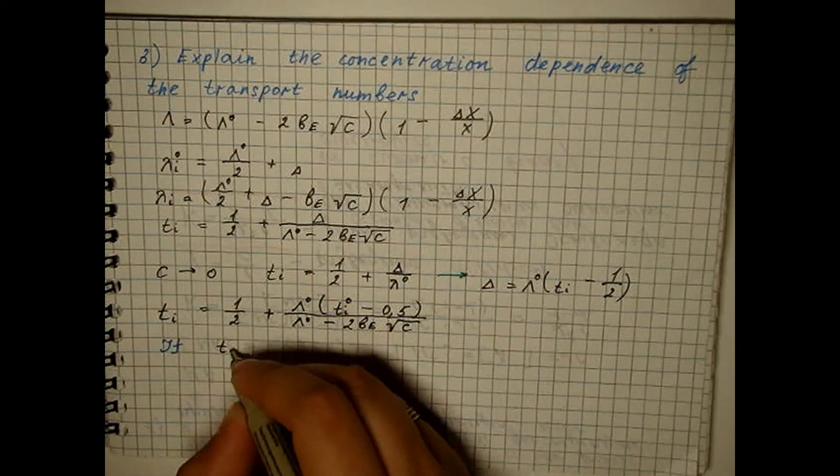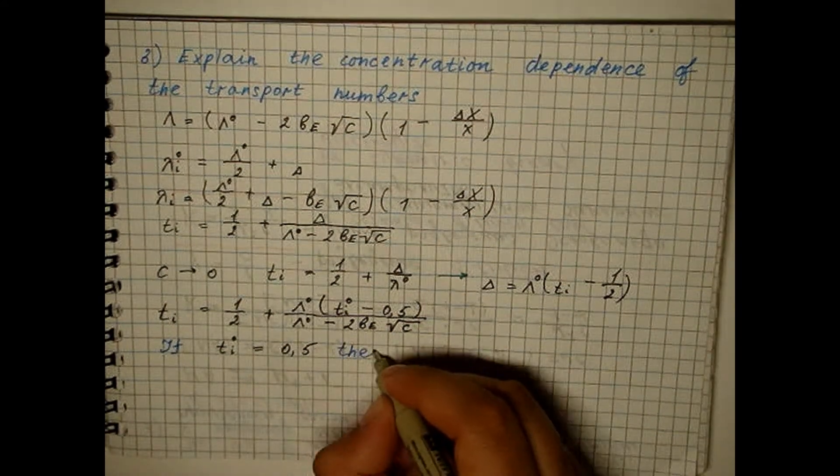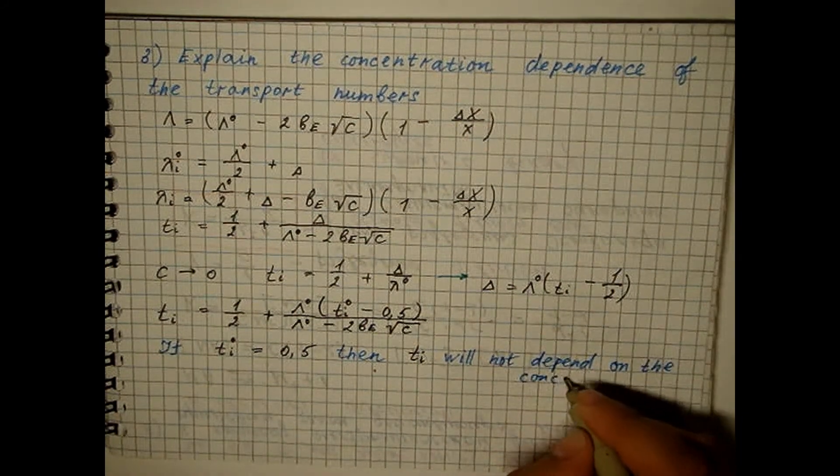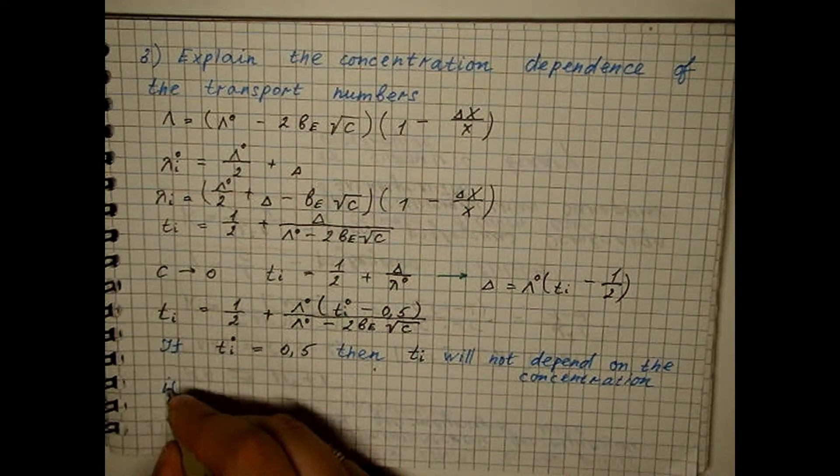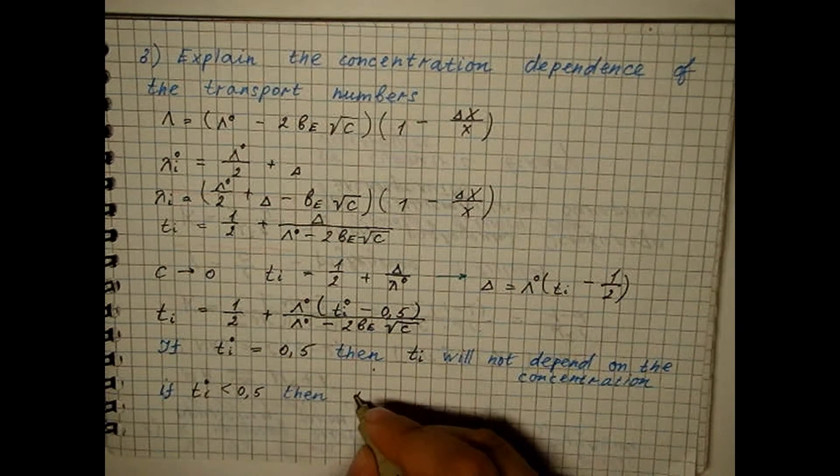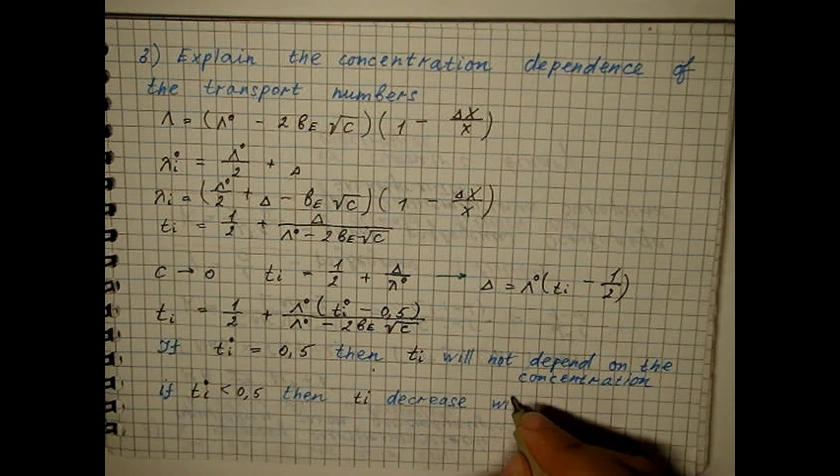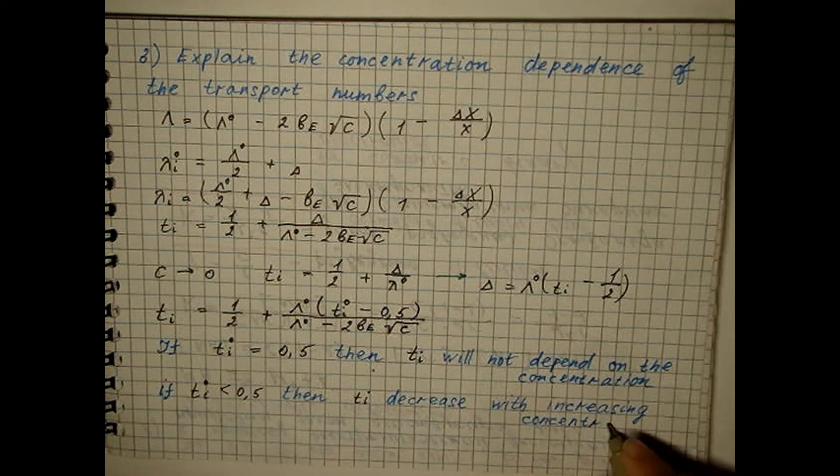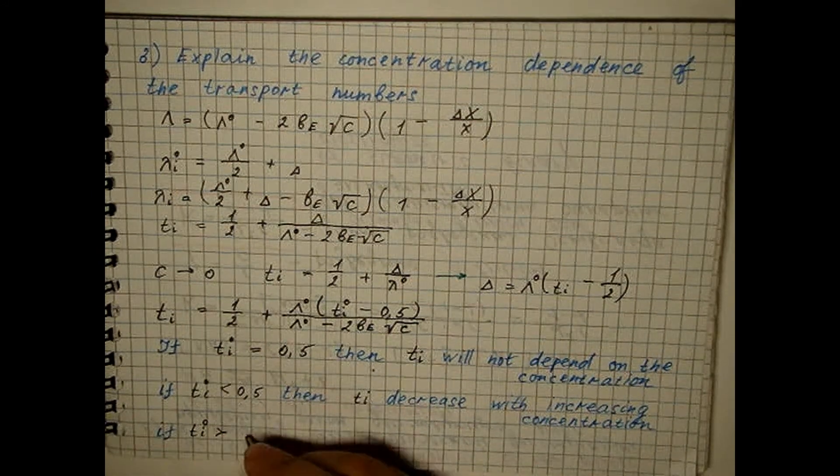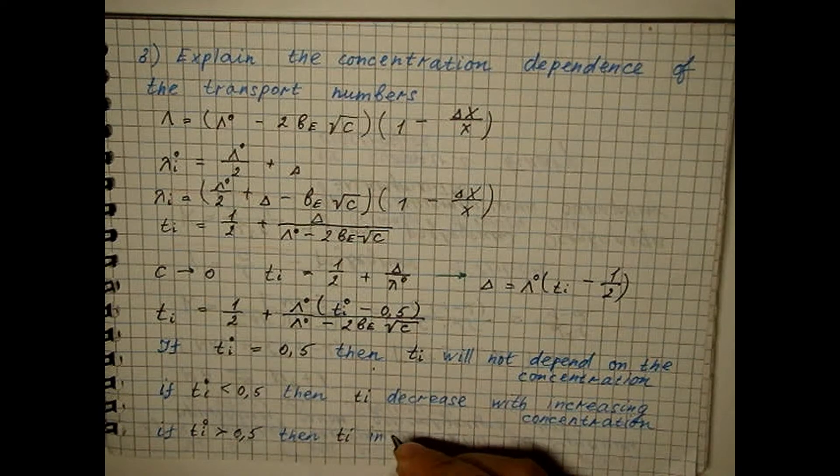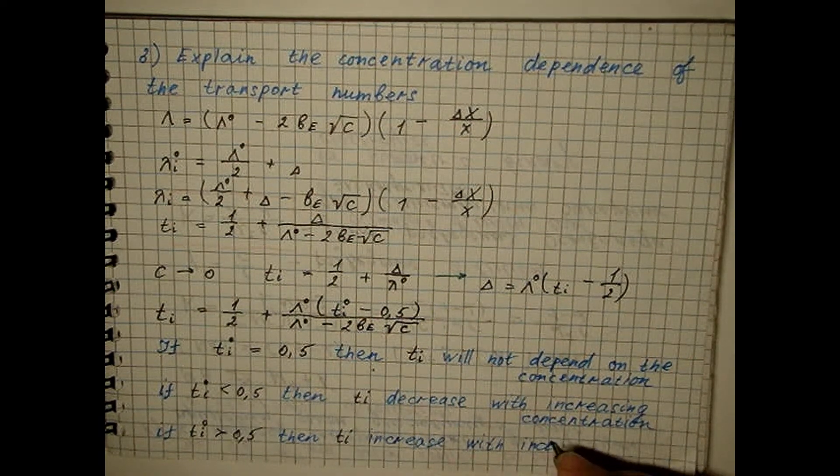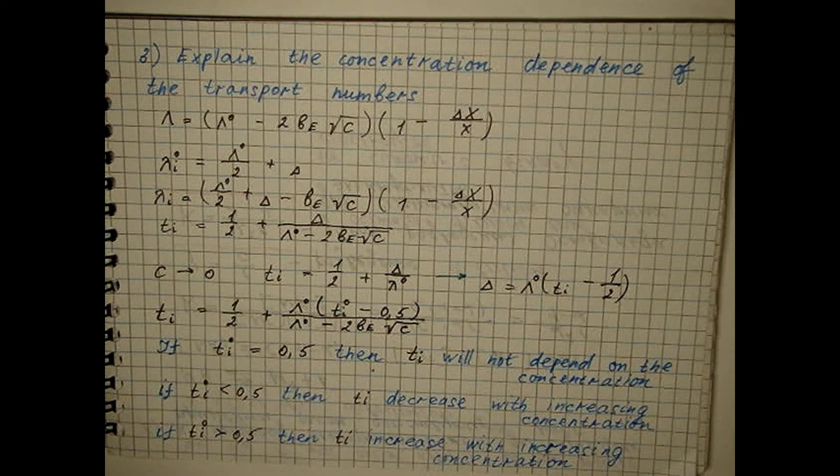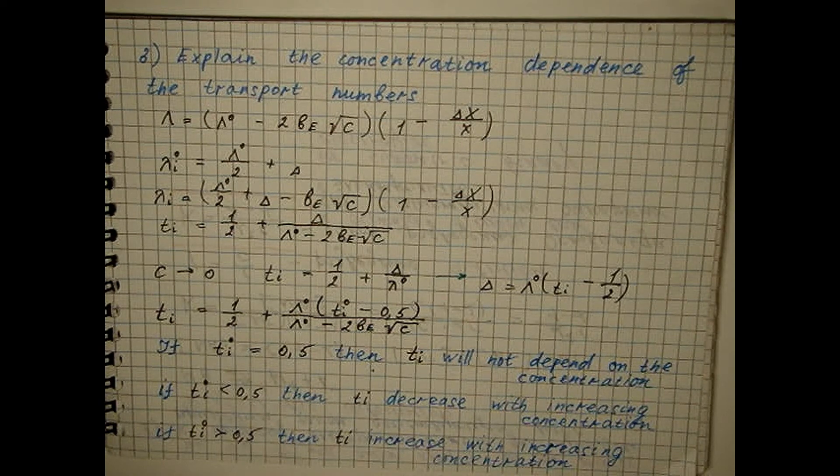So, if the ionic mobilities are equal, then according to the equation, the transport numbers will not depend on the concentration. If the mobilities differ, then the transport numbers decrease with increasing concentration. This is the character of the transport numbers of effective concentrations established experimentally.